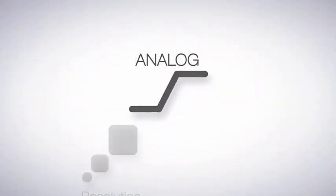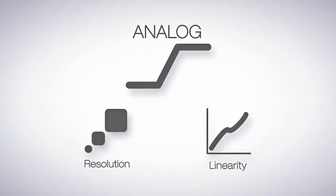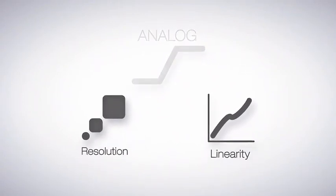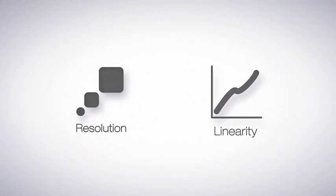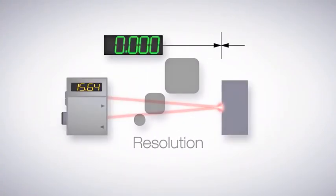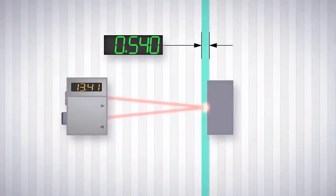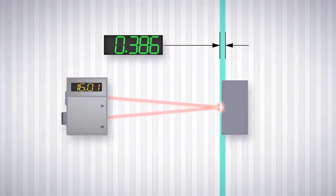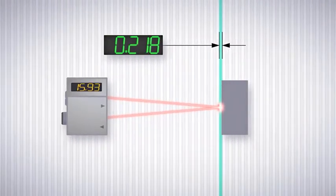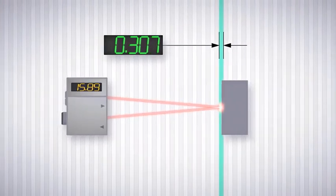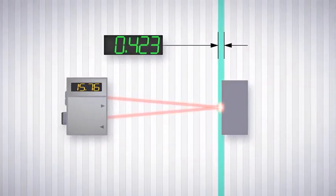In analog applications, resolution and linearity are two specifications used to describe sensors, but not all specifications are equal indicators of real-world performance. The resolution of a sensor tells you the smallest change in distance that the sensor can detect. Resolution represents the best-case condition, but it can be impacted by target conditions, distance to the target, sensor response speed, and other factors. For that reason, it is not the best indicator of real-world performance.